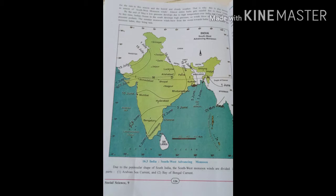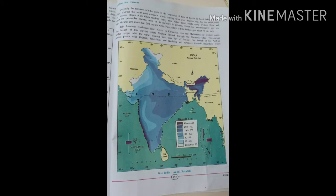The summer monsoon winds blow from the ocean toward India. As these winds are moisture laden, they bring the rain. Due to the peninsular shape of south India, southwest monsoon winds are divided into two parts: Arabian Sea current and Bay of Bengal current.